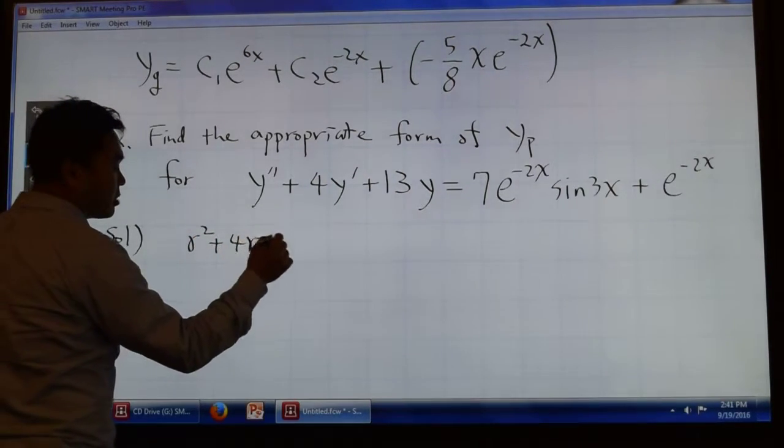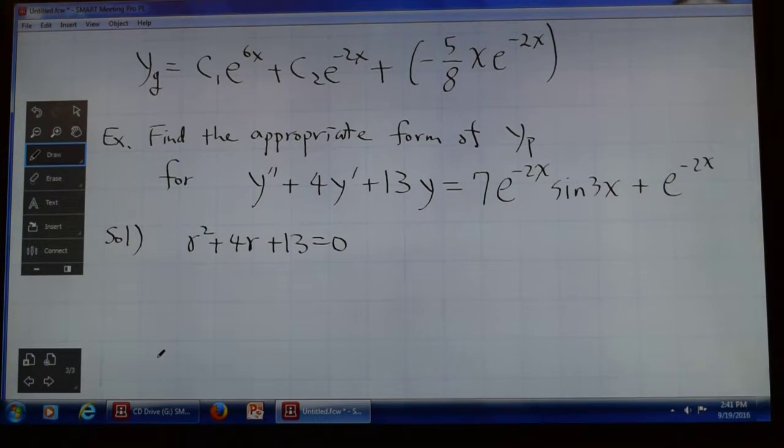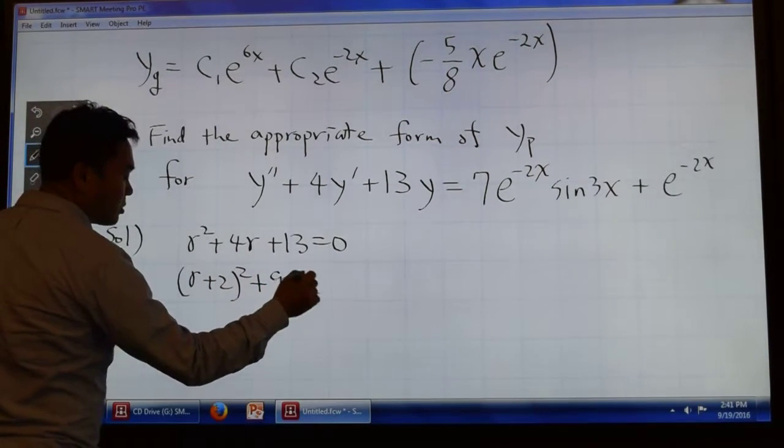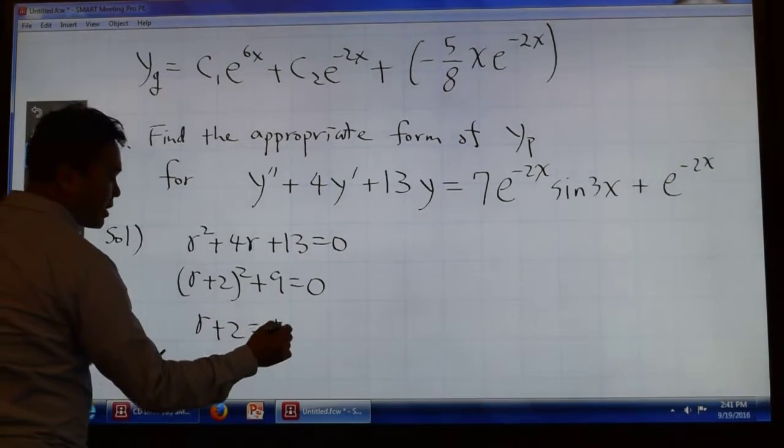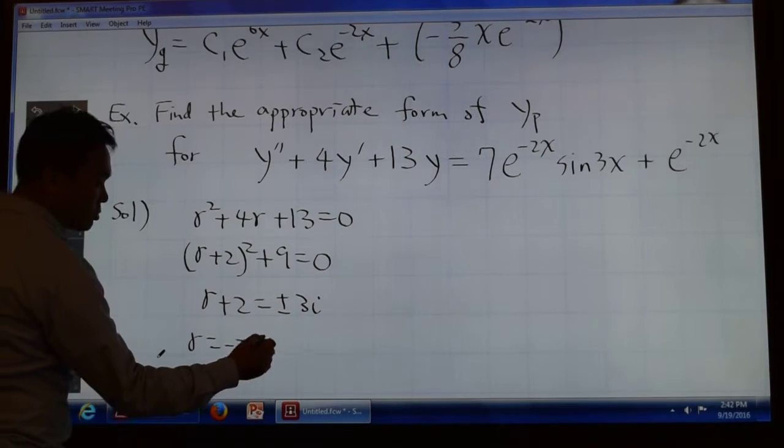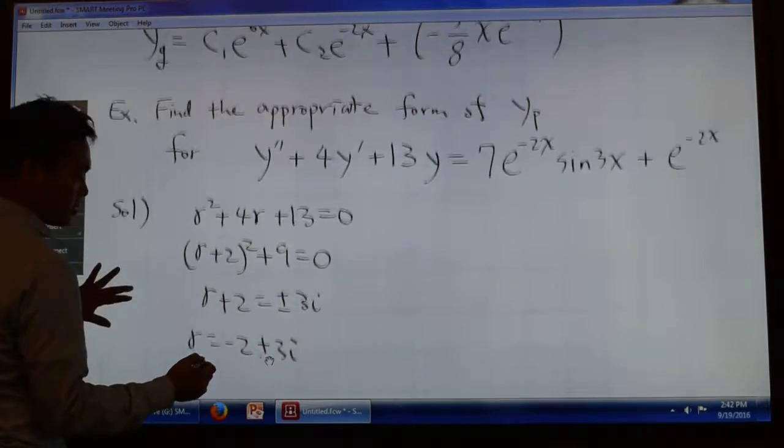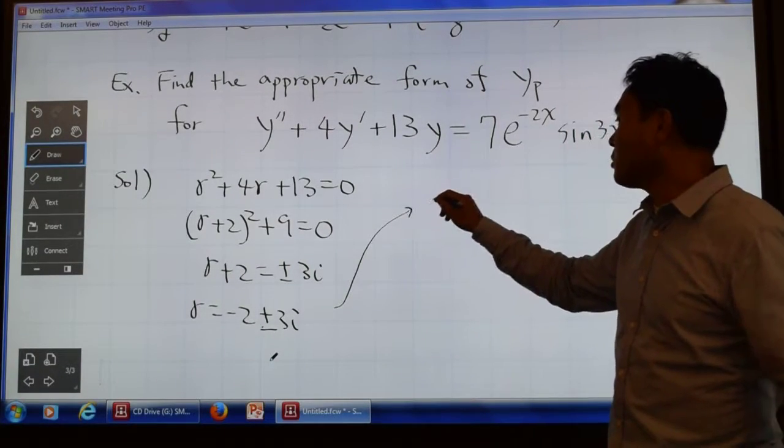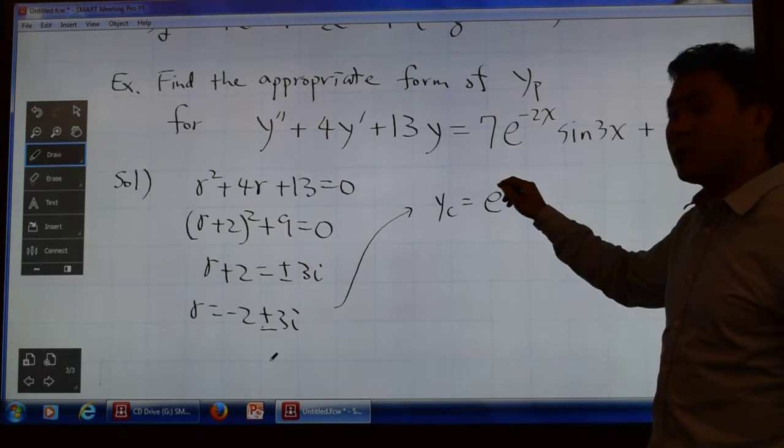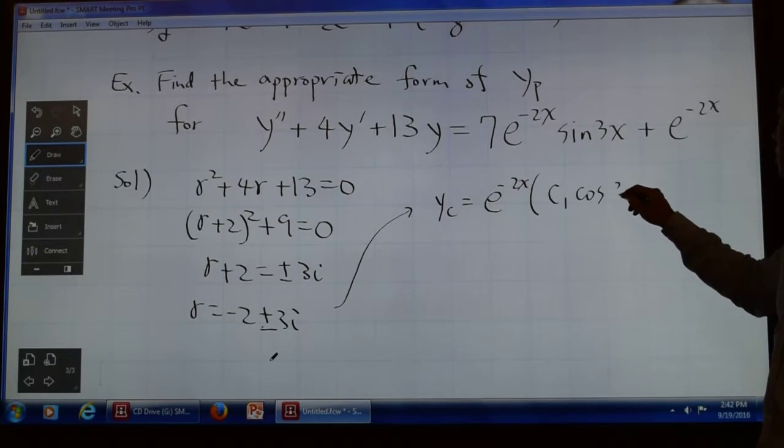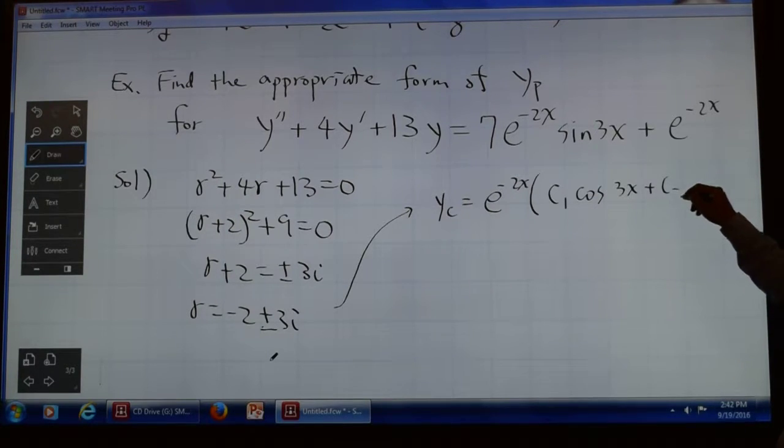Let's do the YC first, because we have to check duplication. R squared plus 4R plus 13 equal to 0. That's a characteristic equation for the homogeneous one. R plus 2 squared plus 9 equal to 0. And you get plus minus 3I because negative 9 and then you take the square root, that's what you're going to get, which gives you R equals to negative 2 plus minus 3I. Sorry for doing this calculation really quickly, but given the time, that will be a very easy thing to get.